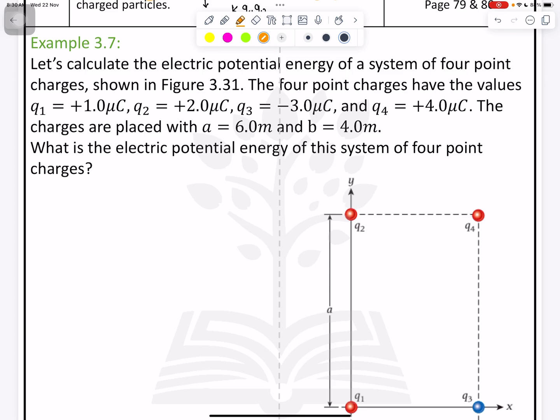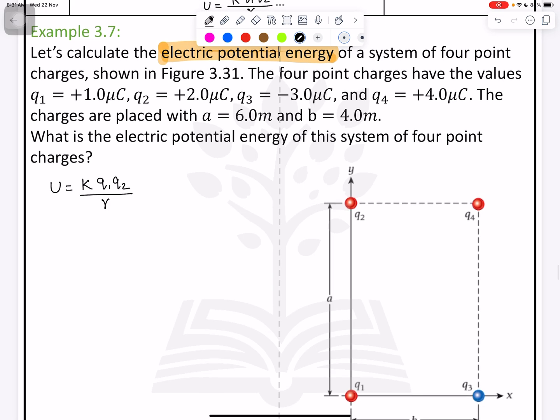Calculate the electrical potential energy. We need to find the electrical potential energy U equals K times Q1 Q2 over R of a system of four point charges shown in the figure. The four point charges have the values Q1, Q2, Q3, Q4.